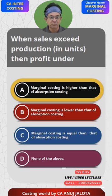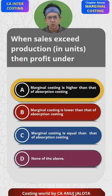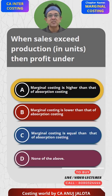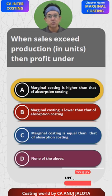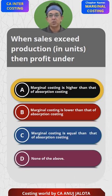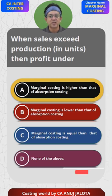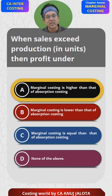A better option for you, rather than believing me, make any question of your own. Ensure that sales is higher than production — so there might be opening stock also. Try to solve the same question using absorption costing and using marginal costing. You yourself will come to the conclusion that profit under marginal costing is higher. In any case, option A is the correct answer.